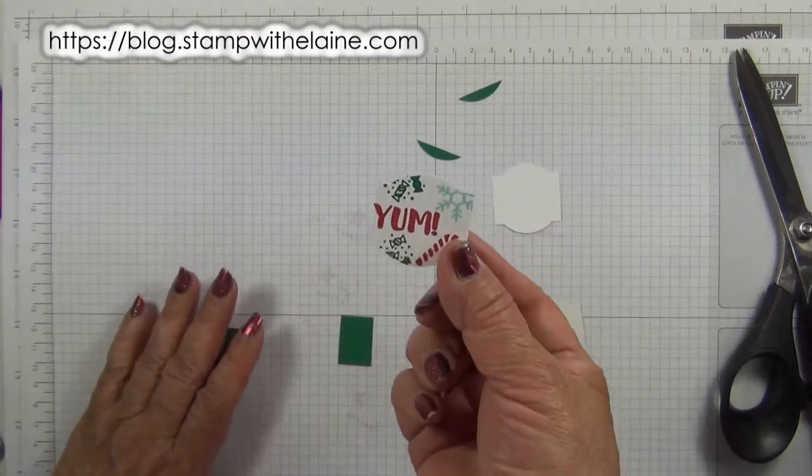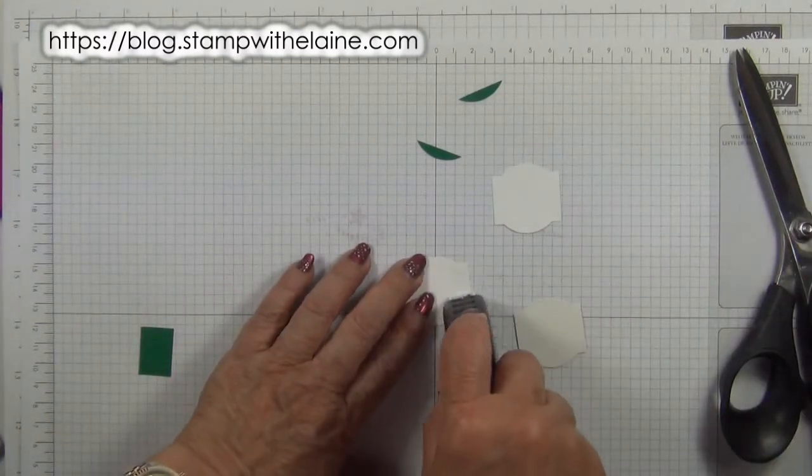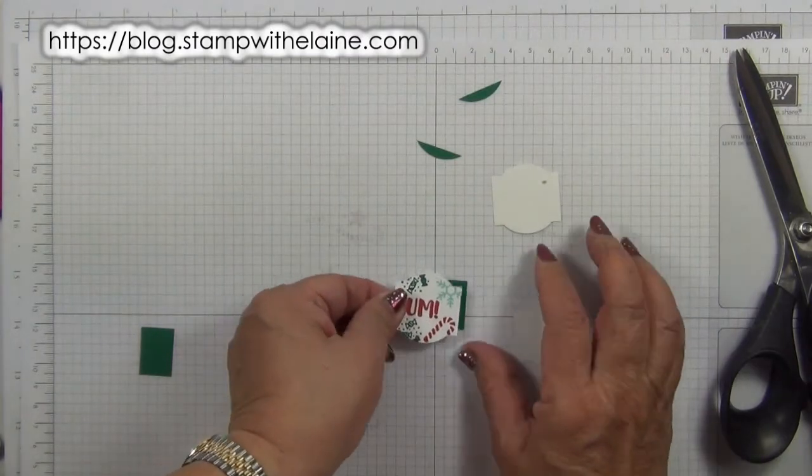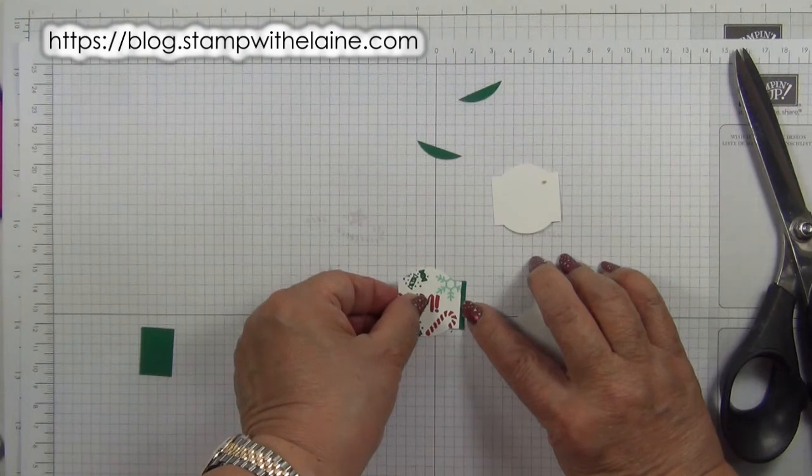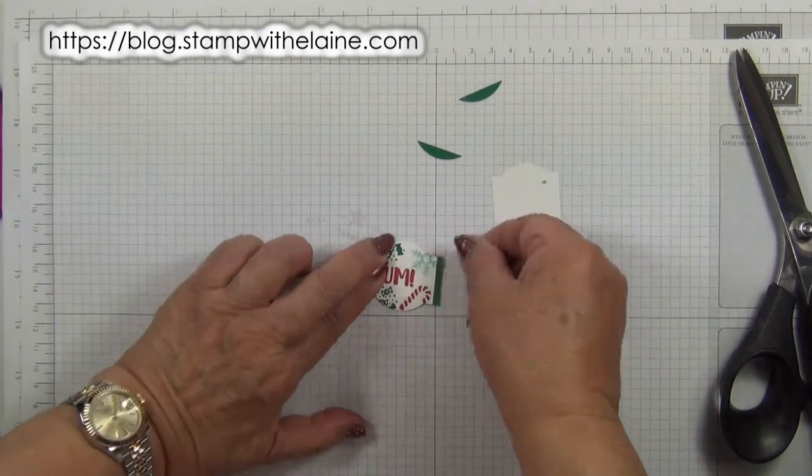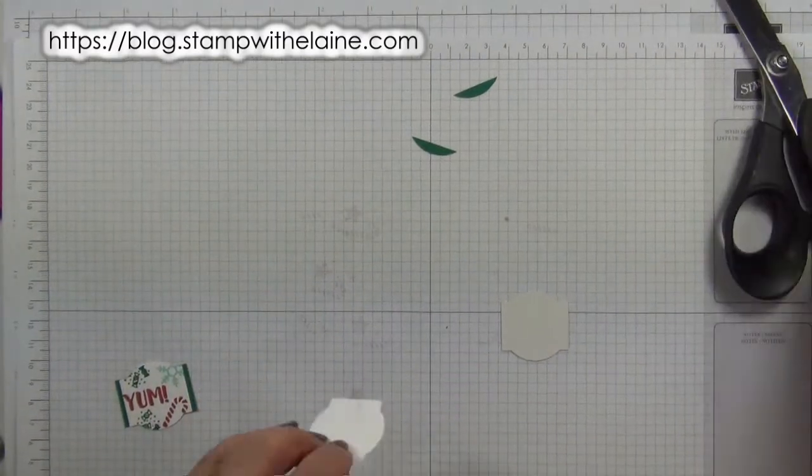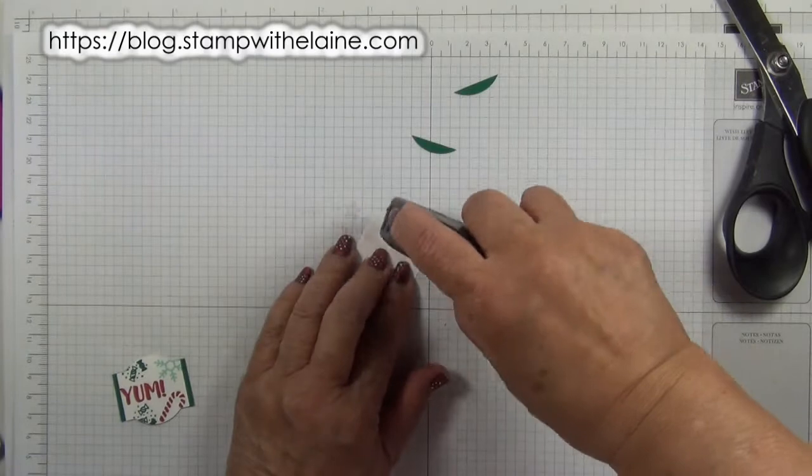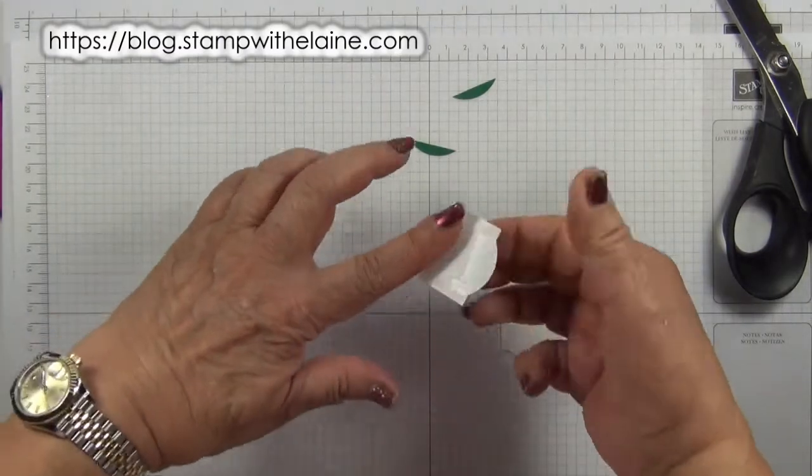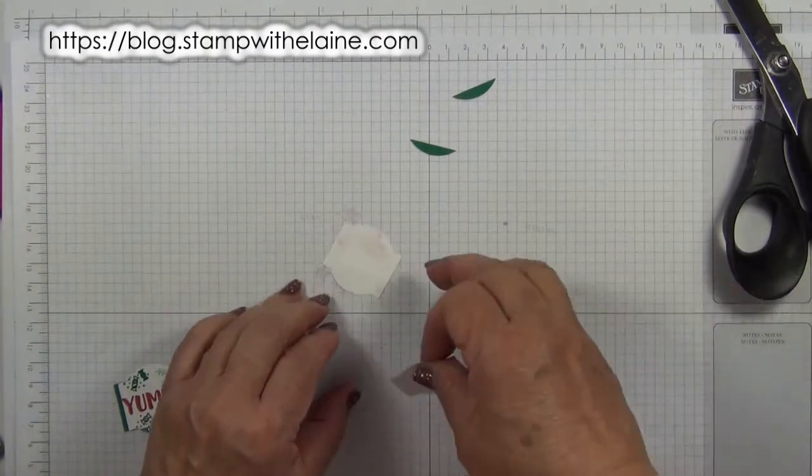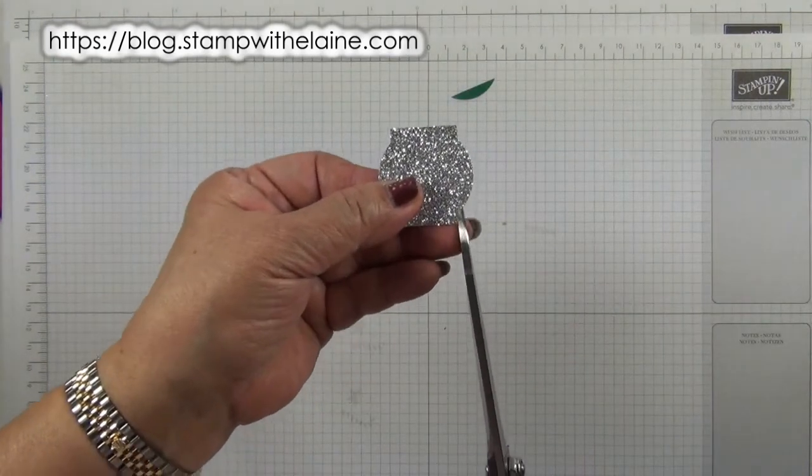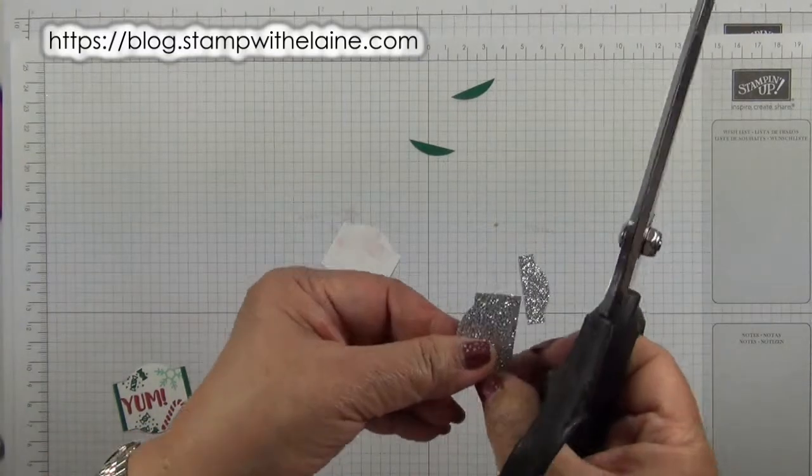With a Shaded Spruce piece, cut straight across so you get a rectangle and cut that in half. On the back of your stamped piece run some Fast Fuse or Snail adhesive and pop your label on top with about an eighth of an inch showing. Then on this piece put Fast Fuse on that as well, then cut this about a quarter of an inch from the straight edge. And do the same with this one.